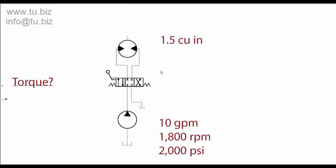All right guys, we're going to calculate torque of a hydraulic motor. Let's say you have a hydraulic pump delivering 10 gpm, 1,800 rpm, and 2,000 psi, and we need to know what torque this motor is going to be delivering.